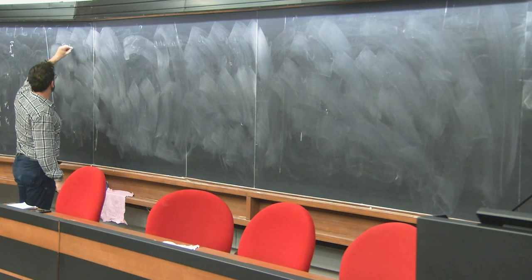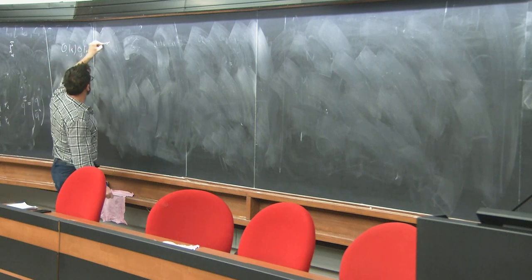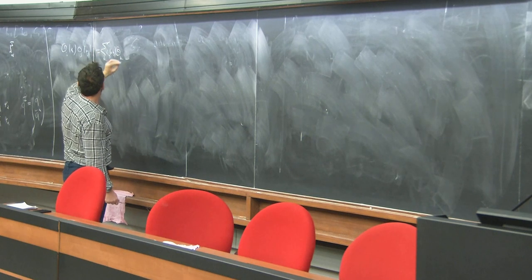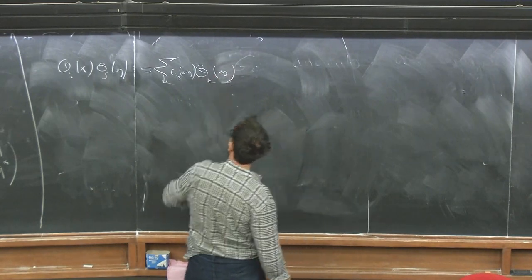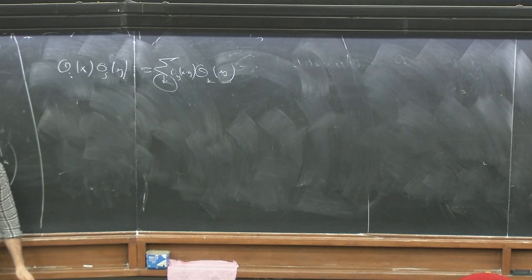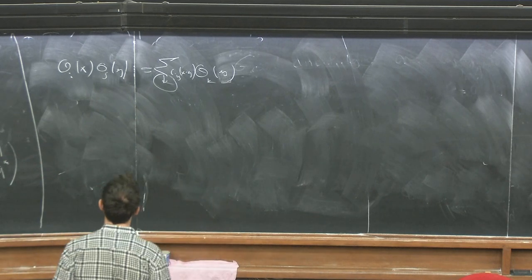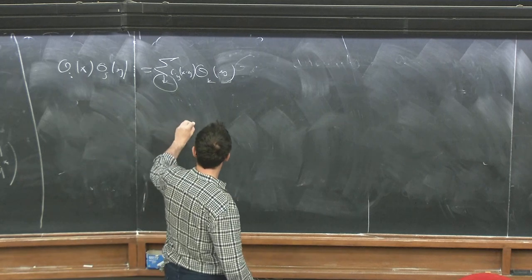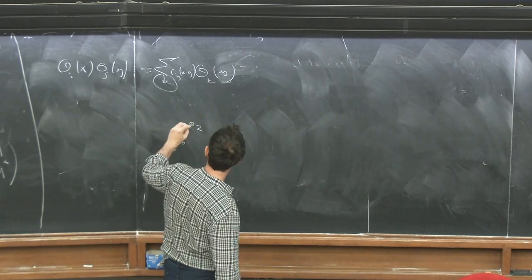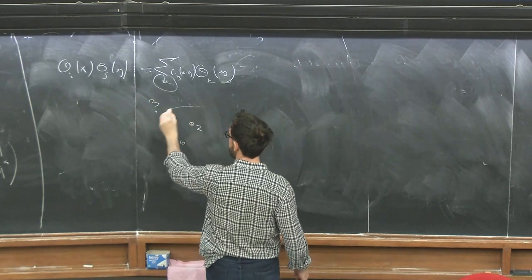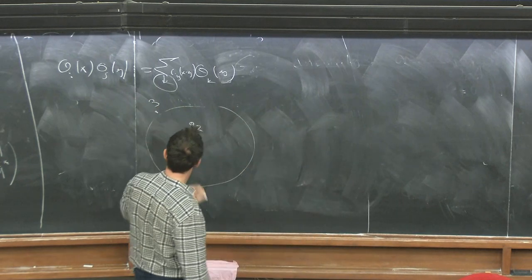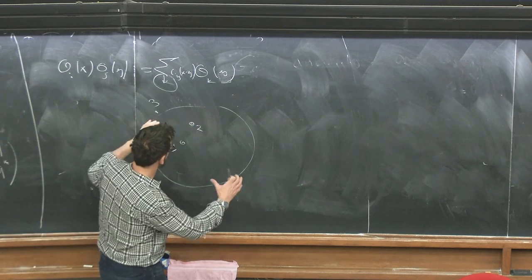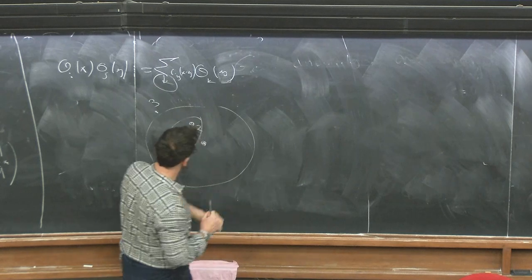The idea is that we have this operator product expansion with coefficient functions fixed by conformal covariance. The sum runs over the entire set of local operators, which is isomorphic to the space of states. This expansion is absolutely convergent inside a correlation function up to the insertion of the next operator. If you have operators O1 and O2, you draw a big sphere which doesn't encounter any additional insertions, and you can replace the two operators by a single operator at the center of the sphere.